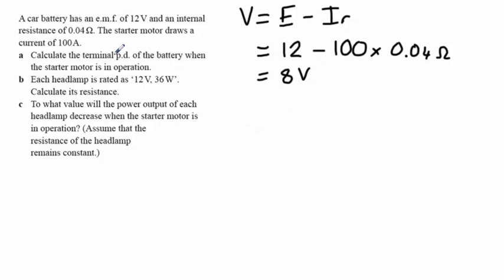Now, the second part of this question isn't directly related to internal resistance, but it wants us to calculate the resistance of a headlamp. So here we have, we know the headlamp is rated as 12 volts at 36 watts. So where we need to relate power, voltage and resistance to do that, we use our equation P equals V squared divided by R.